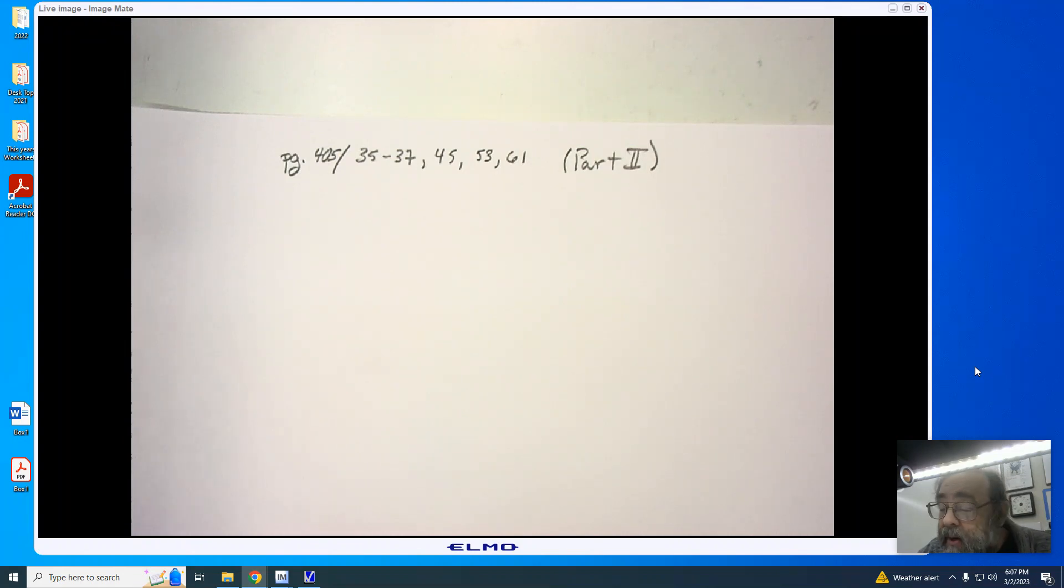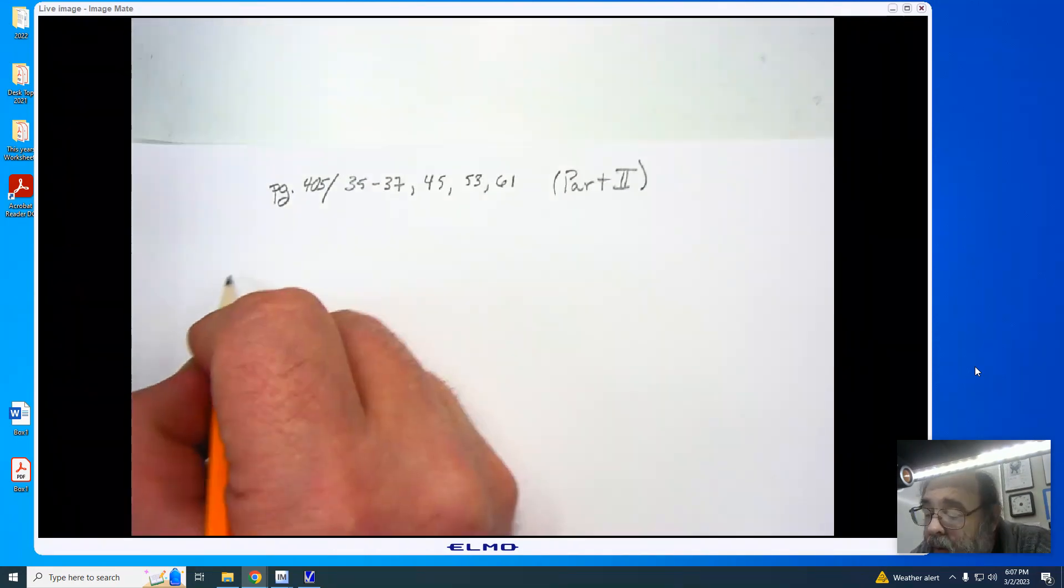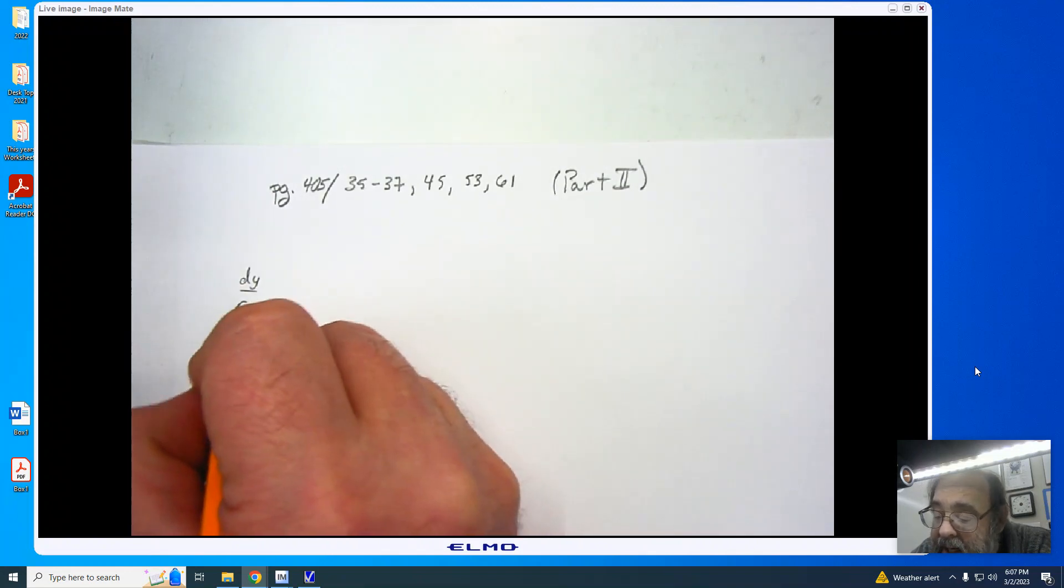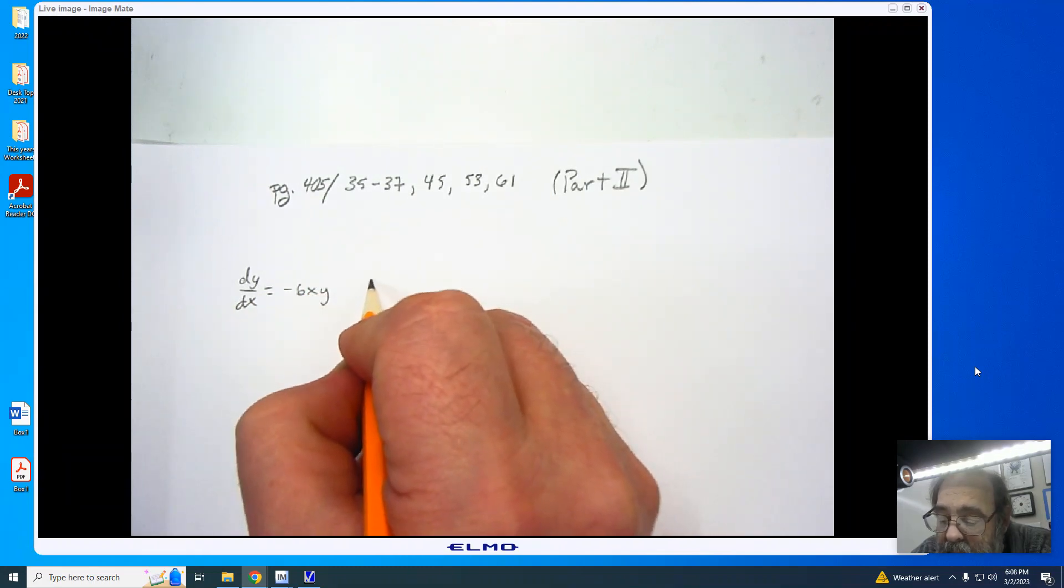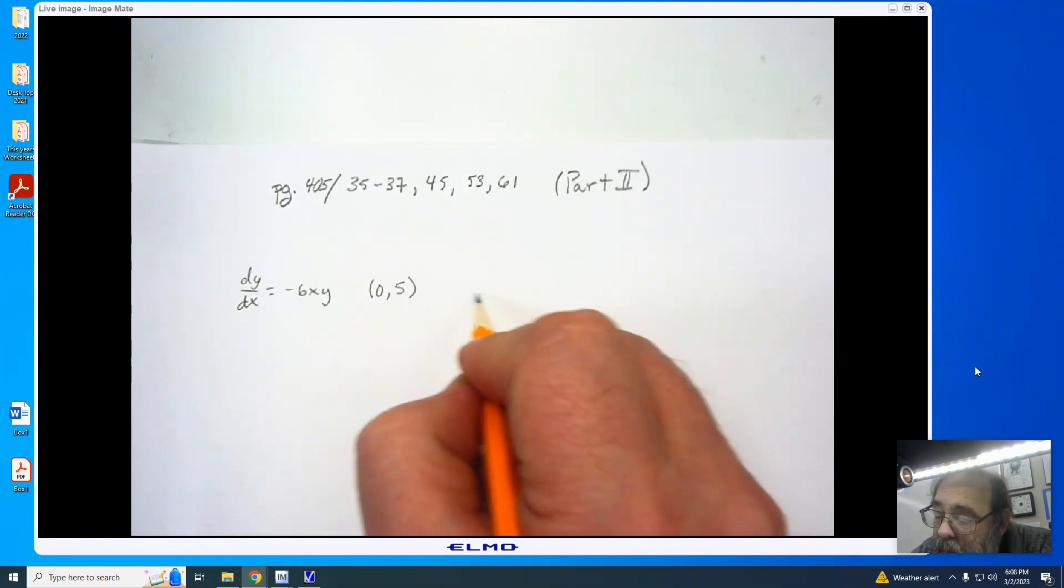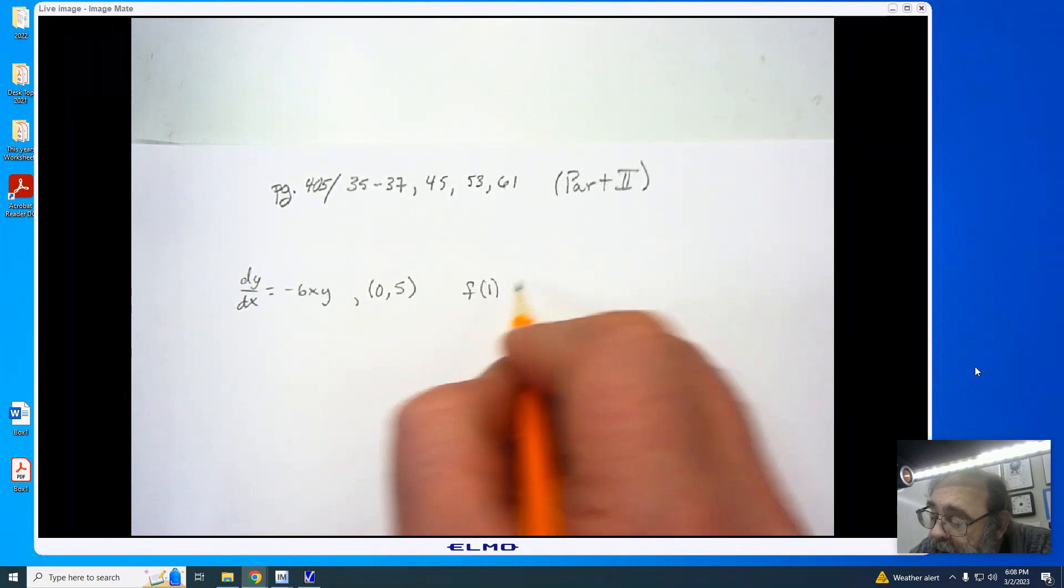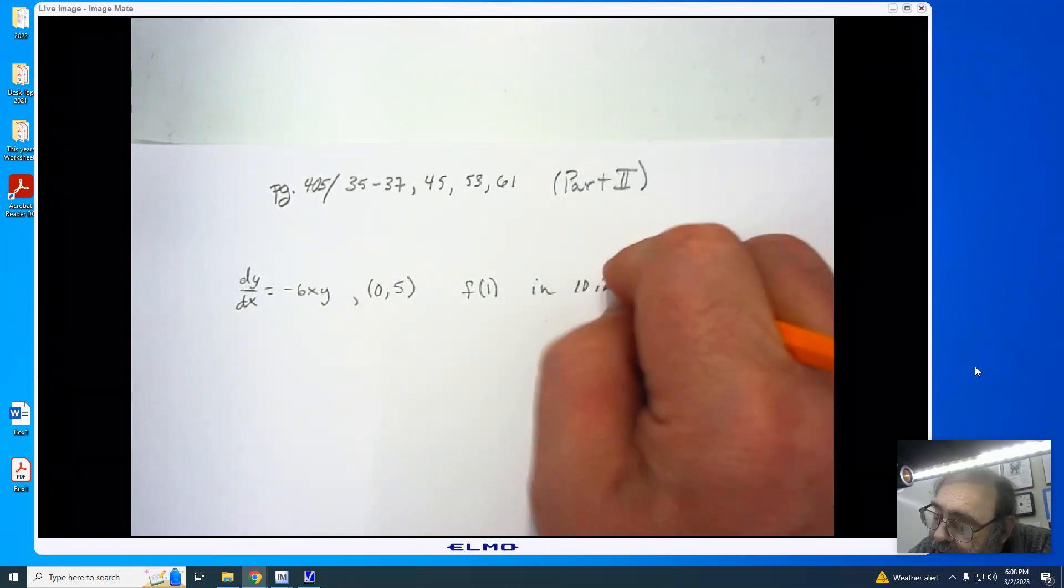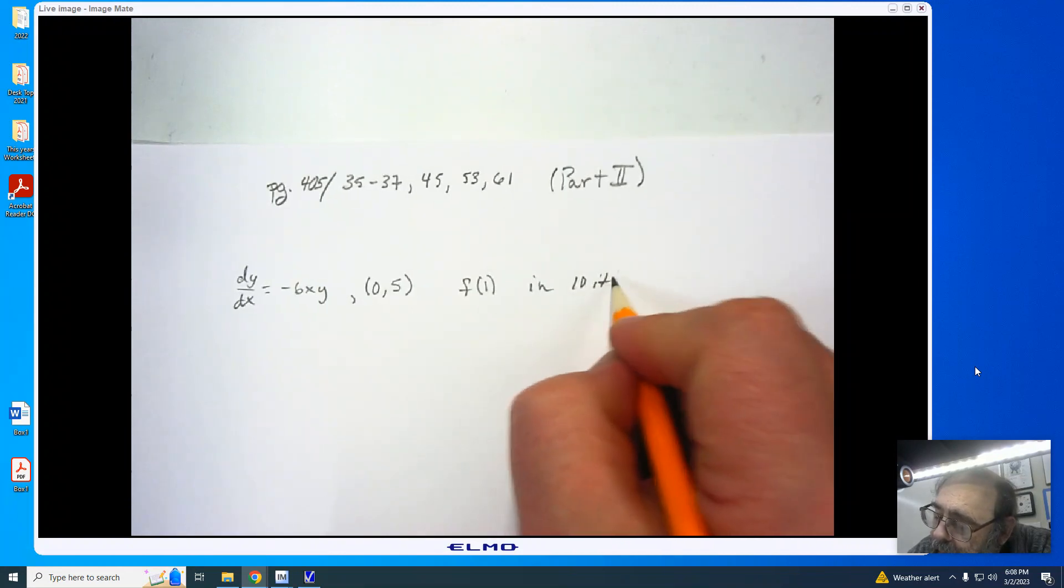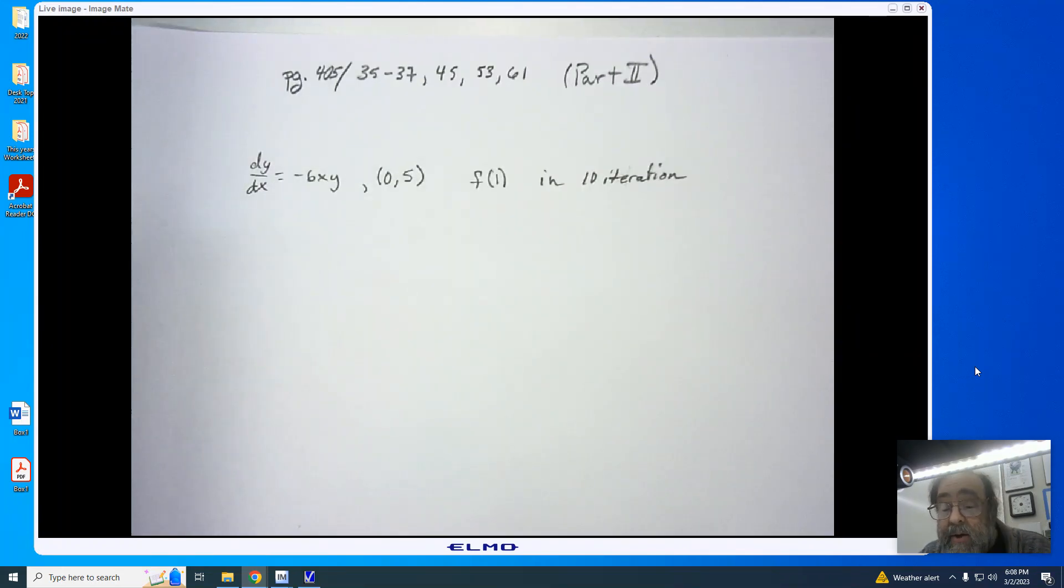Just so you're aware, number 37 is asking you to use Euler's method with 10 iterations so that you can take dy/dx equals negative 6xy, and we are working with our initial condition (0, 5). We are looking to find f(1) or y(1) in 10 iterations. Now this does take a little bit of time, so I do recommend that you take your time as you do it.